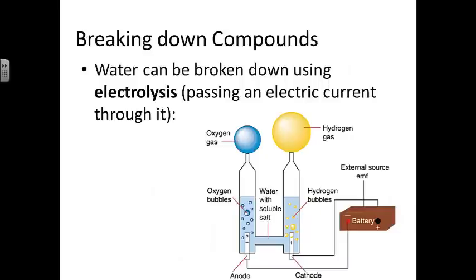Water can be broken down using electrolysis, passing an electric current through it. You can see here that as a current is passed through it, at the anode, oxygen bubbles will form and collect on one side. At the cathode in the other tube on the far right, you have hydrogen bubbles forming and collected at the top.